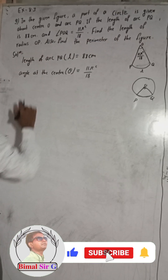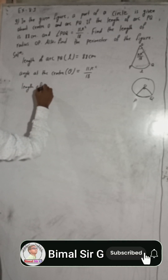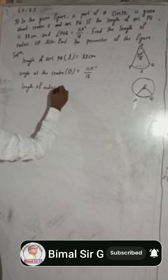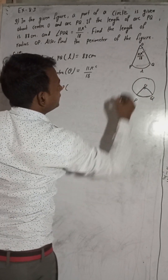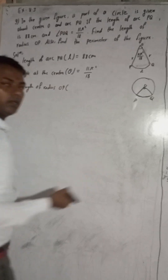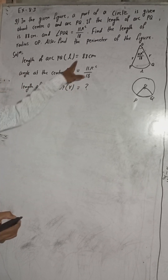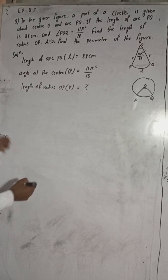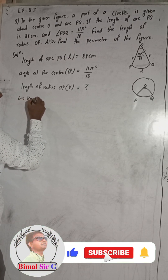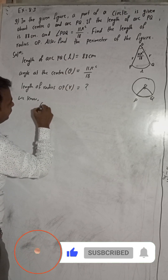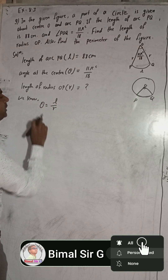Then find the length of radius OP. So length of radius OP — that means both OQ and OP are equal to R, they are the same. So here R is what we have to find. This is the three conditions: two conditions are given and the third we have to find. We know we have the formula theta is equal to L by R. You have to remember: theta equals L divided by R.